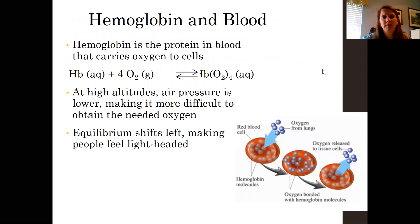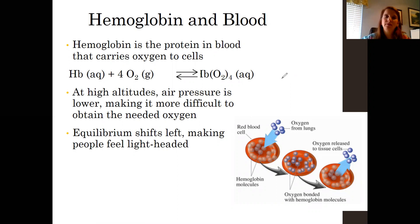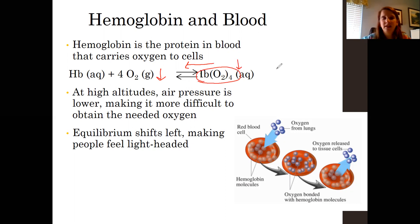A good example of this is hemoglobin. We talked about atmospheric pressure at sea level versus up in the mountains in Colorado. When you're up in the mountains, atmospheric pressure is low, so you're taking away some of that oxygen gas, and the equilibrium shifts to the left to try to make more oxygen. Hemoglobin's job in the blood is to pick up oxygen and carry it to your body cells. So if equilibrium is shifting left to try to make more oxygen, the concentration of oxyhemoglobin decreases — that's why you feel lightheaded in the mountains.